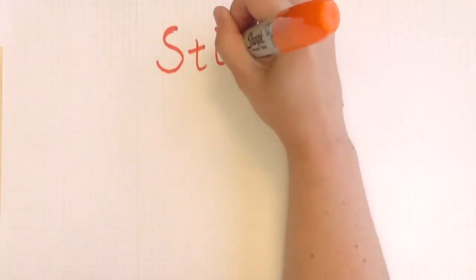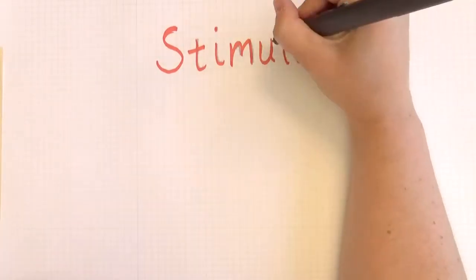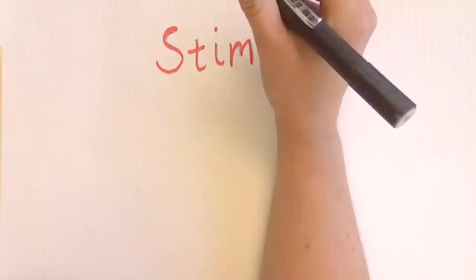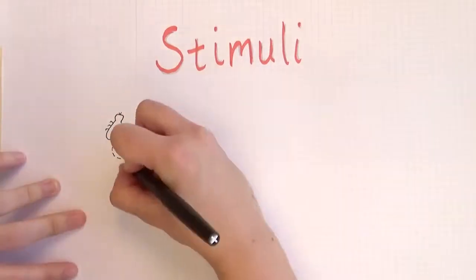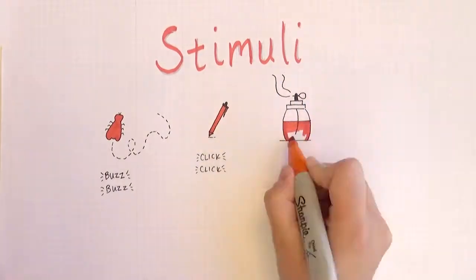When you're in class or studying, minimize distractions. At any given moment, many stimuli or signals are vying for your awareness. There may be a fly buzzing around, someone clicking their pen, or a pleasant smelling perfume in the air.